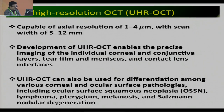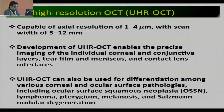Recently, there is ultra-high resolution OCT, which is capable of axial resolution of 1 to 4 microns and can image widths of 5 to 12 millimeters. Development of ultra-high resolution OCT enables precise imaging of individual corneal and conjunctival layers, tear film and meniscus, and contact lens interfaces. UHR OCT can also be used to differentiate among various corneal and ocular surface pathologies including ocular surface squamous neoplasia, lymphoma, pterygium, melanosis, and Salzmann nodular degeneration.